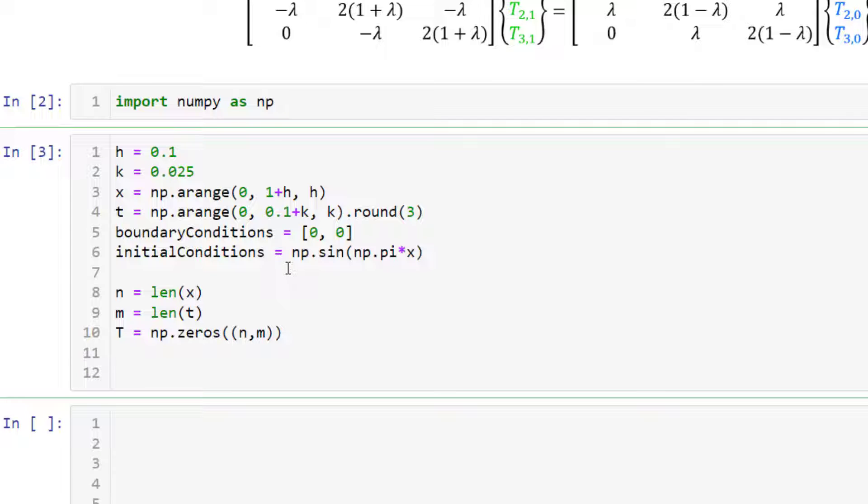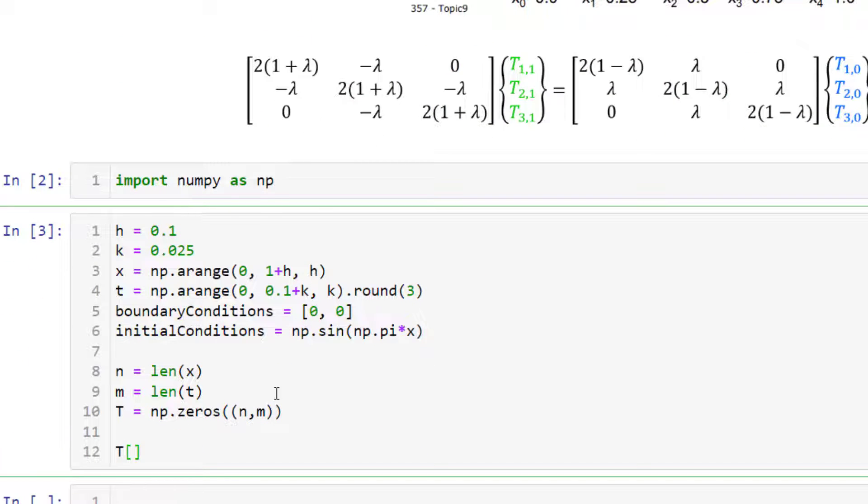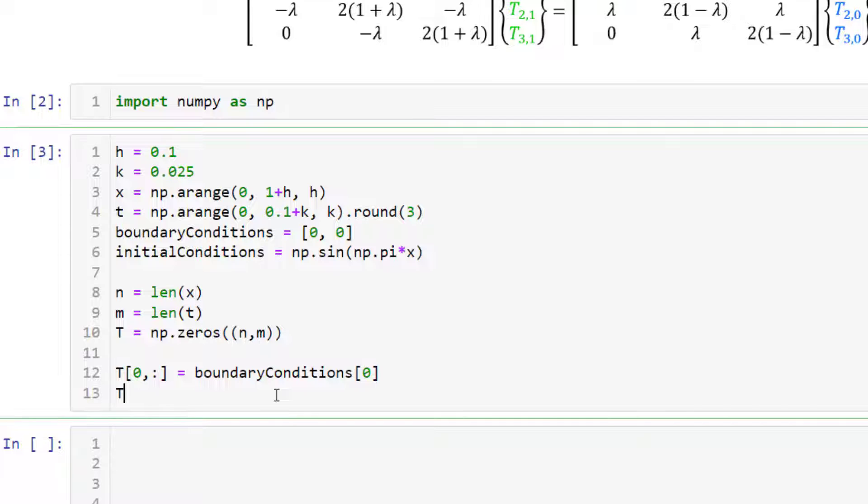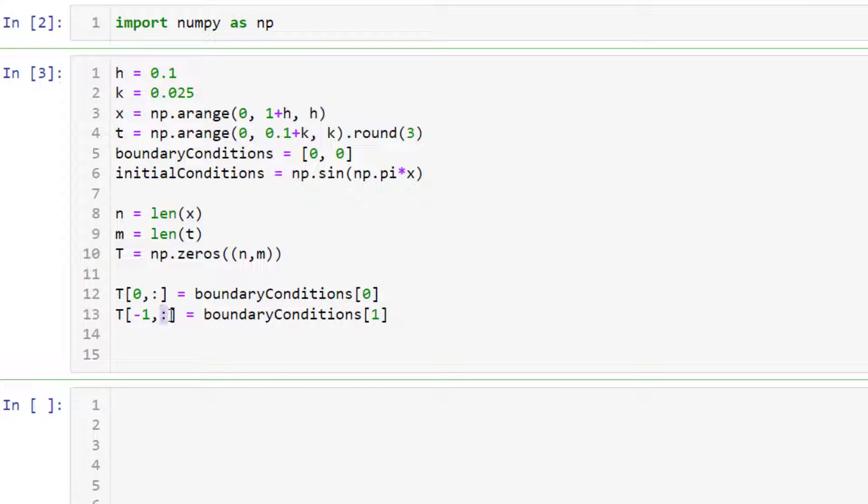Now we'll define our boundary conditions. So the first index we're going to deal with is position. And the second index is going to be time. So for the first index, we will say position. So this boundary condition, the first boundary is when i equal to 0. And we're talking about all time values equal to boundary condition 0. Same thing applies for the last boundaries. But instead of typing in n, you could just say minus 1 and all columns. For initial conditions, we will be looking at when the time index is 0. That's the initial condition. So t for all columns and initial time. Initial conditions.